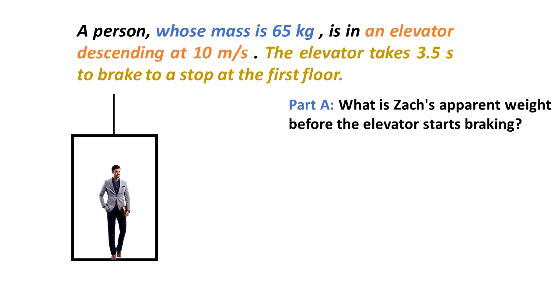From what's given, we know that the elevator is going downwards at 10 meters per second and acceleration is equal to zero. We could consider this to be in dynamic equilibrium. We have the man feeling the force of gravity, mg.